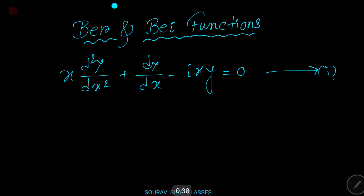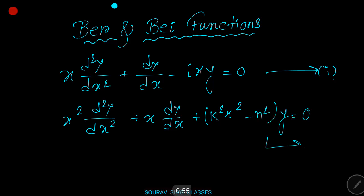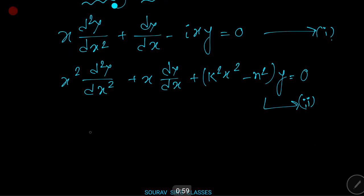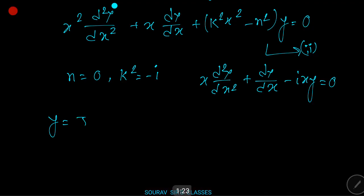This equation (1) is a particular case of the differential equation x² d²y/dx² + x dy/dx + (k²x² - n²)y = 0. On putting n = 0 and k² = -i in equation (2), we get x d²y/dx² + dy/dx - ixy = 0.